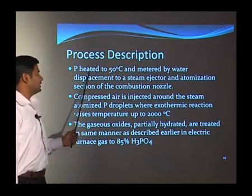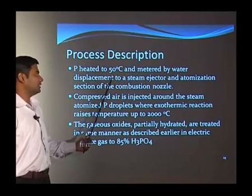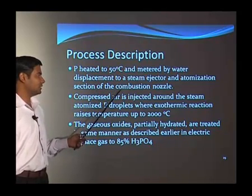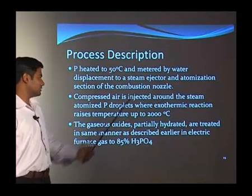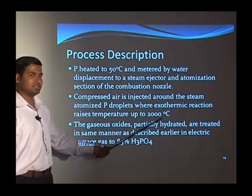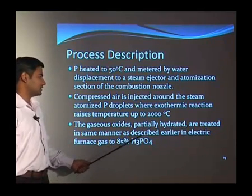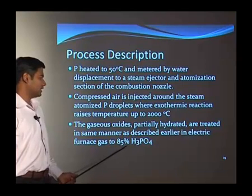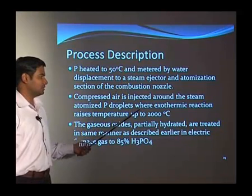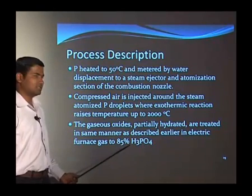Elemental phosphorous, retained at 50 degrees Celsius, is metered by water displacement to a steam ejector and atomization section of the combustion nozzle. The elemental phosphorous is converted into phosphorous pentoxide, and then compressed air is injected around the steam-atomized phosphor droplets, where the exothermic reaction raises the temperature up to 2000 degrees centigrade. The gaseous oxide, partially hydrated, is treated in the same manner as described for the electric furnace to obtain 85 percent phosphoric acid.